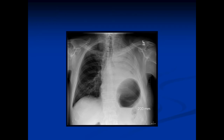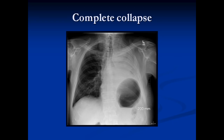What's happened here? We've got consolidation involving all that we can see of the left lung. We've also got evidence of volume loss — a tracheal shift and the diaphragm is shifted up. Looking very carefully, this is a complete collapse of the left lung. The main stem bronchus is amputated centrally — it's occluded. We've occluded the main stem bronchus, and there's complete collapse of the left lung.